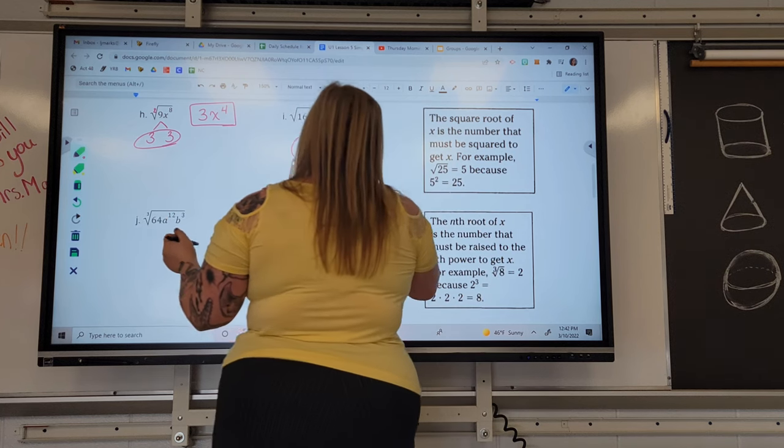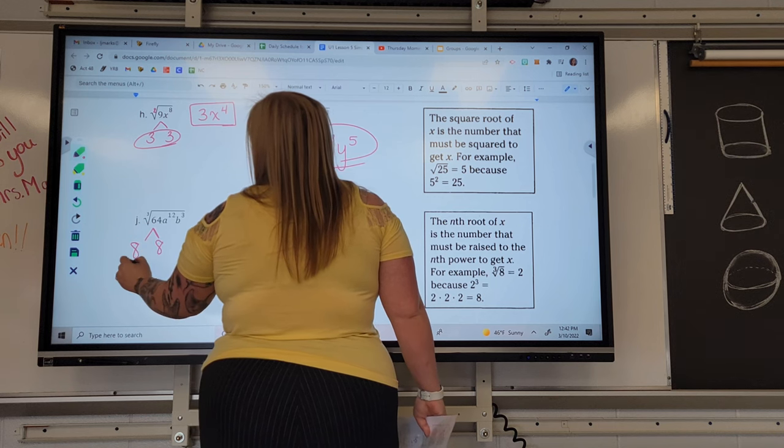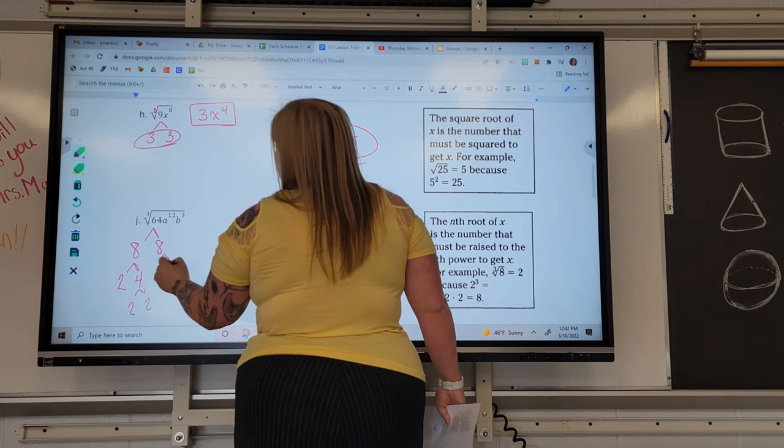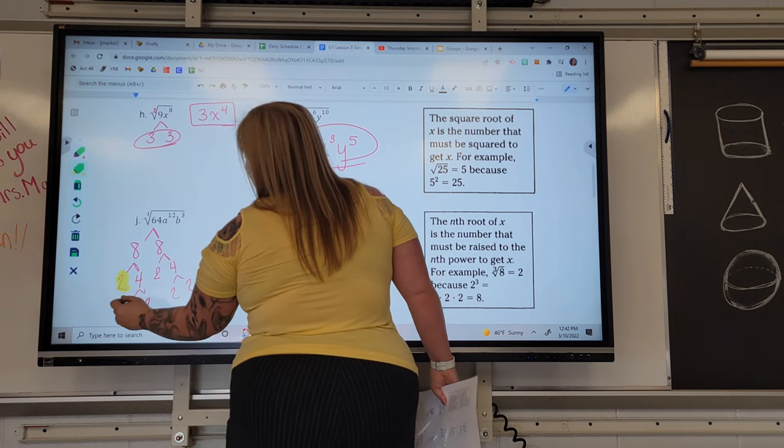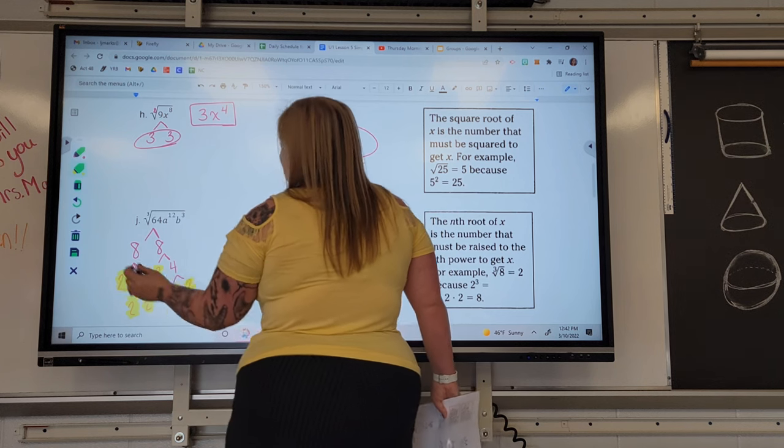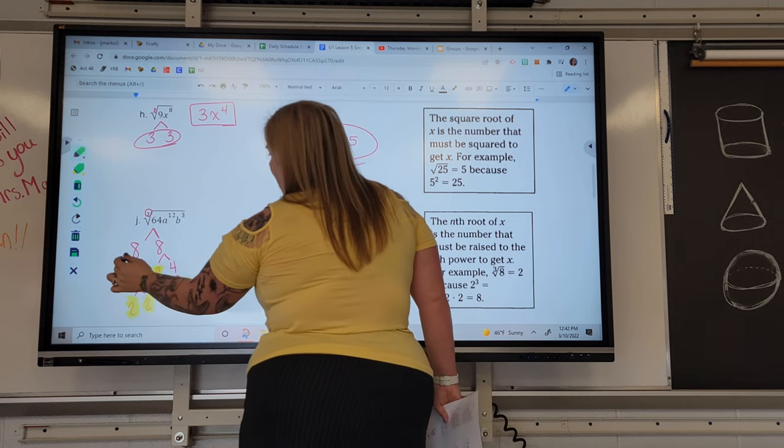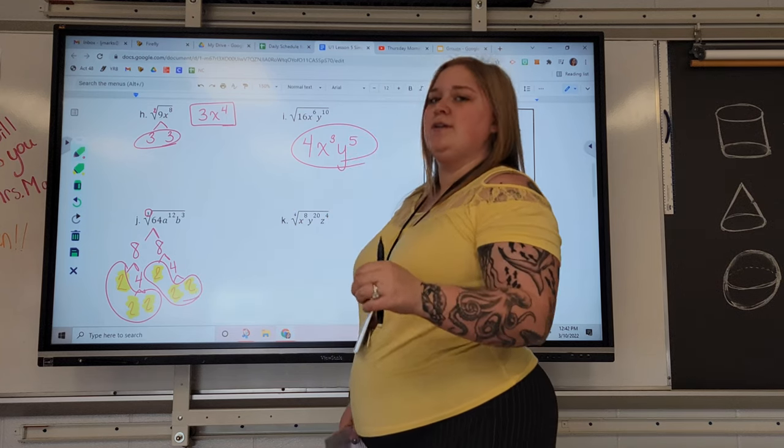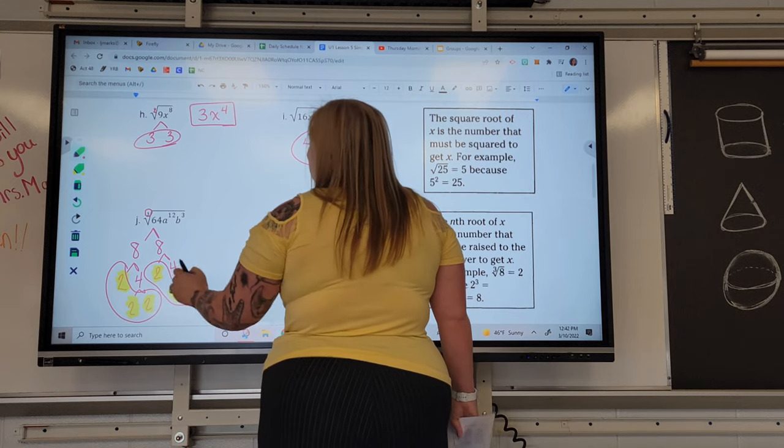Hopefully that makes sense. Here for J, we're looking for groups of 3. The third root of 64. 64 is 8 times 8. 8 is 2 times 4. 4 is 2 times 2. Again, 8 is 2 times 4. 4 is 2 times 2. Look at all of our pieces. 1, 2, 3, 4, 5, 6. If we are looking for groups of 3, we have 2 groups, 2 groups of 3 2's. That makes 2 2's.